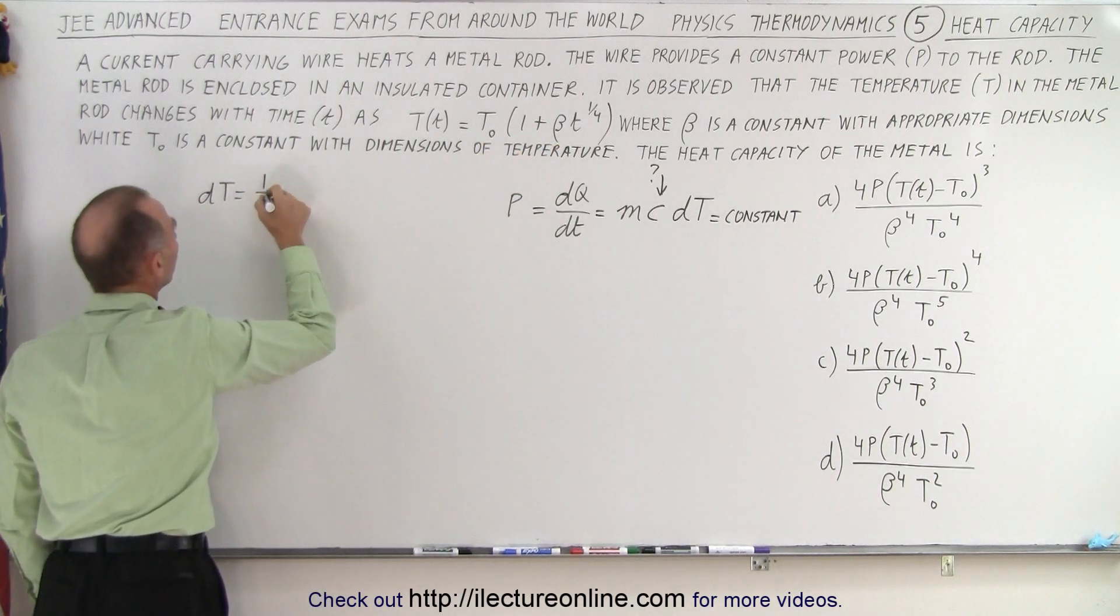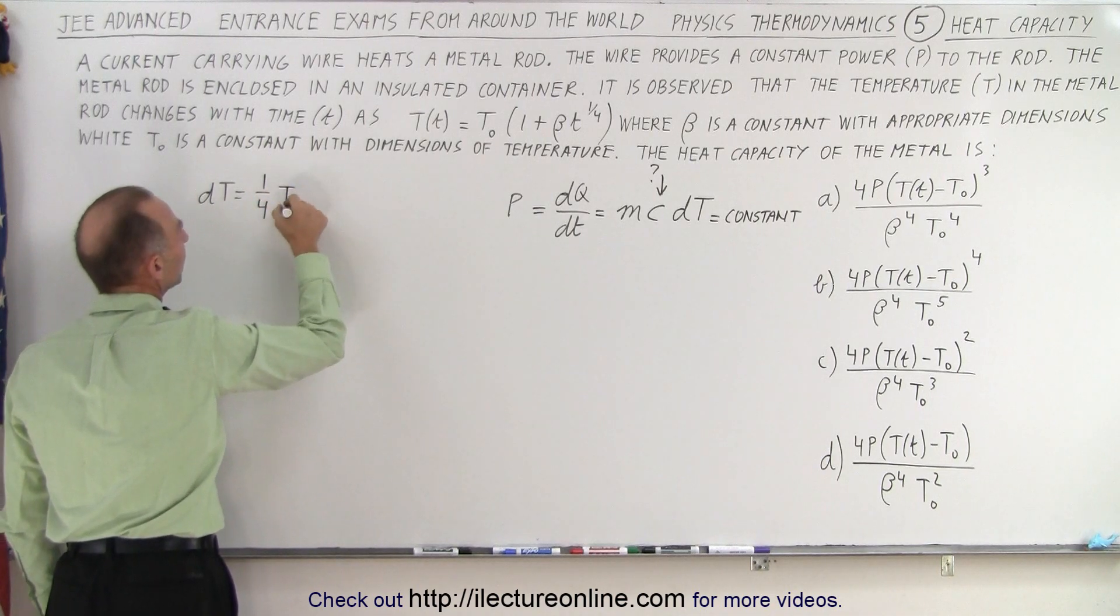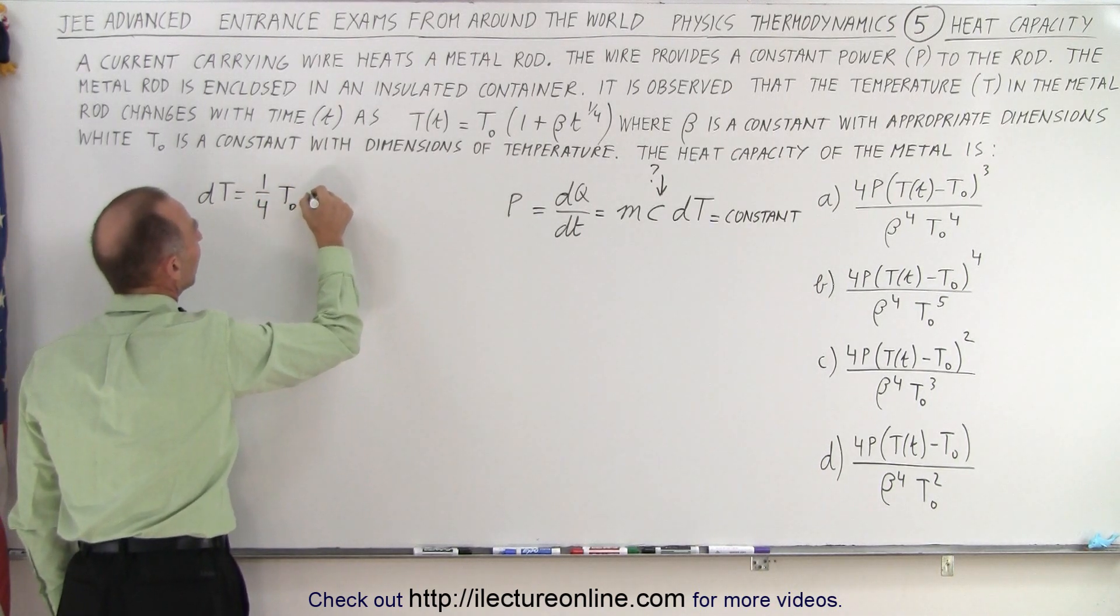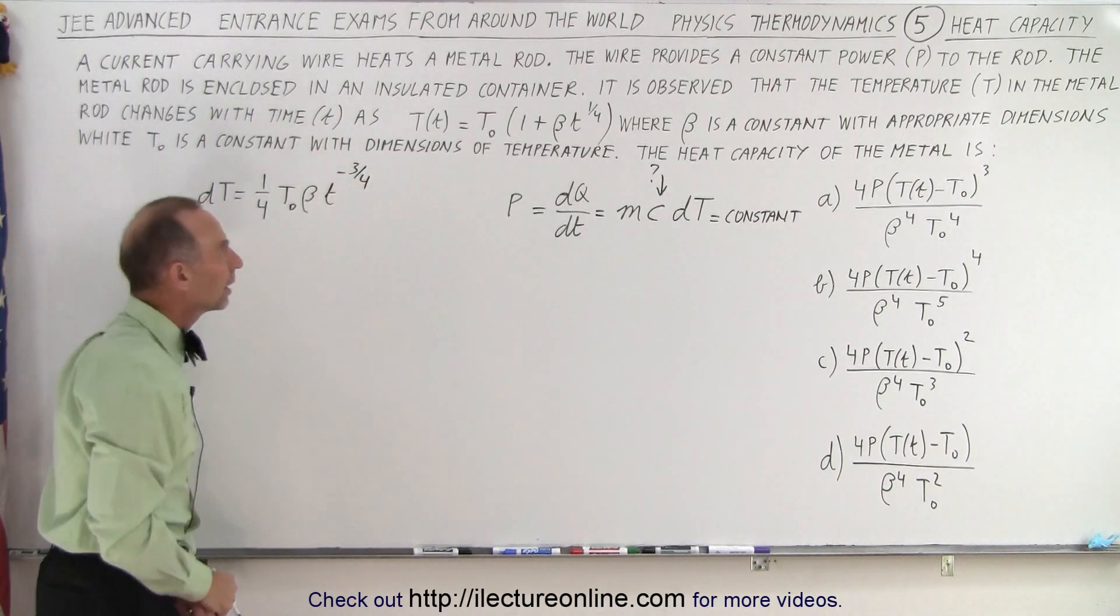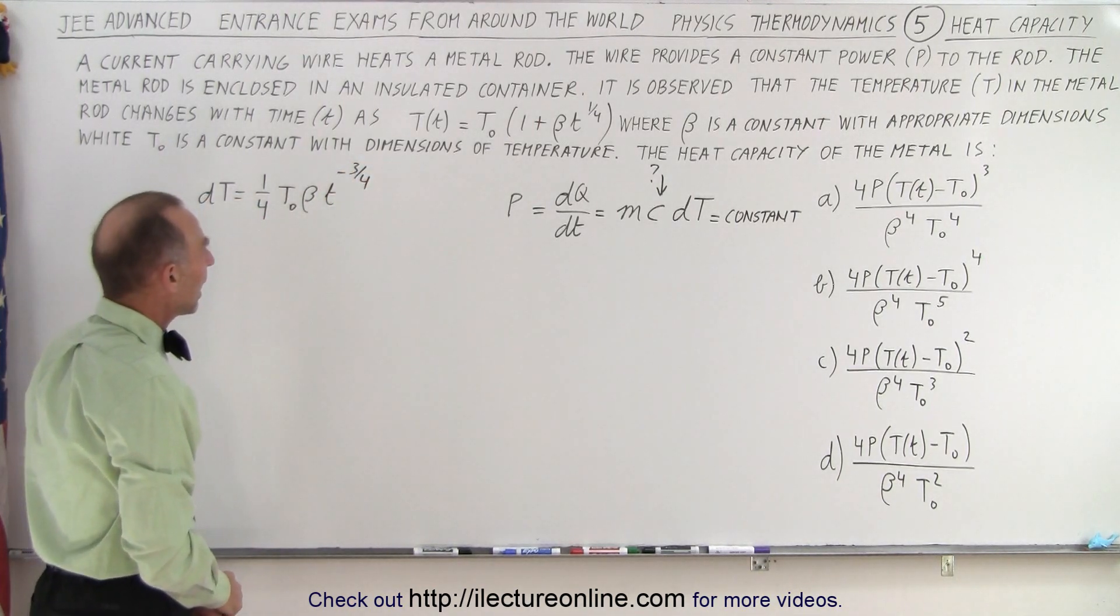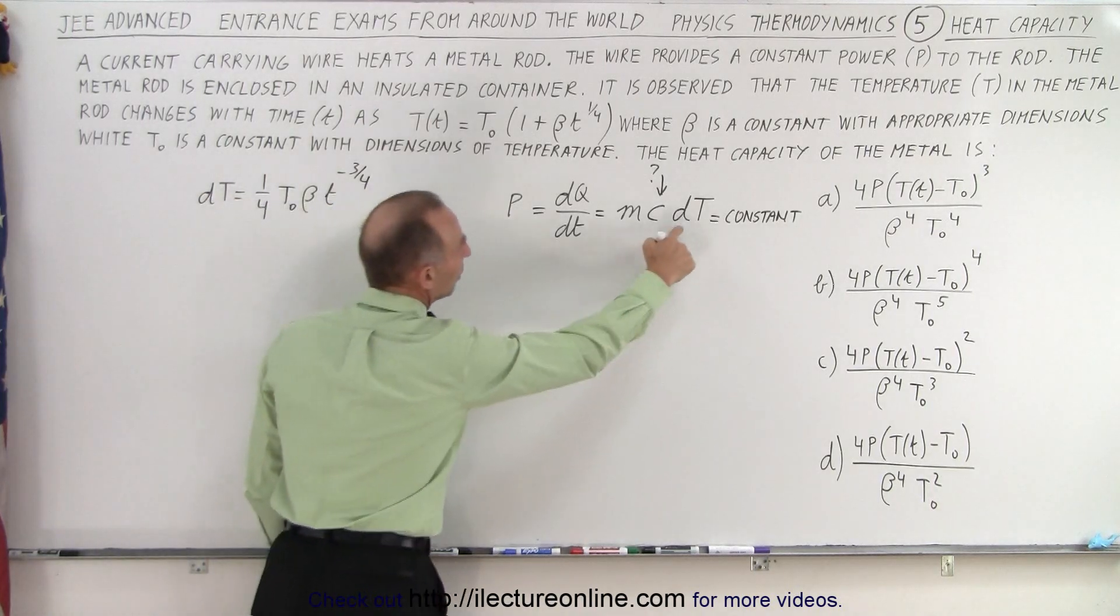So we end up with one quarter T sub naught times beta times t to the minus three quarters because we subtract one from the exponent.